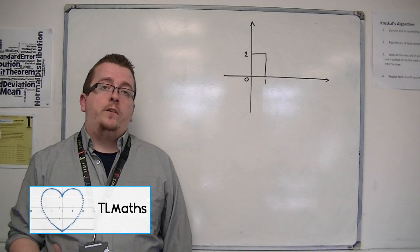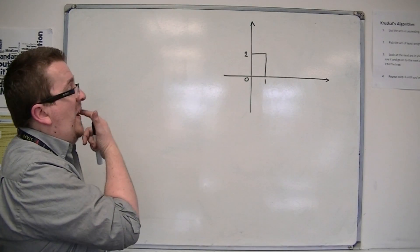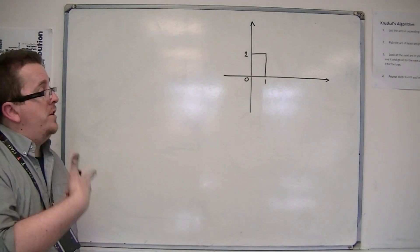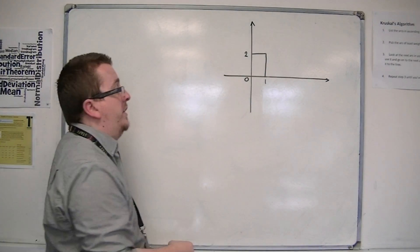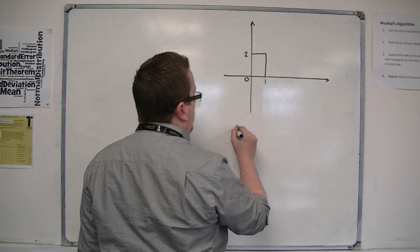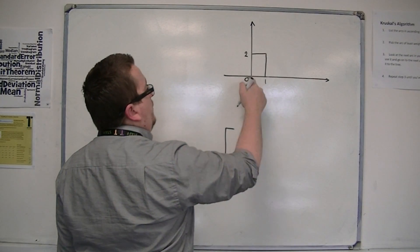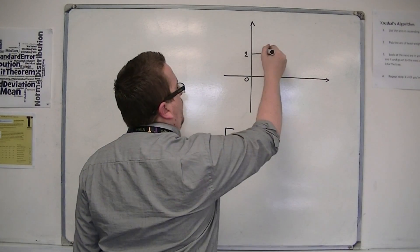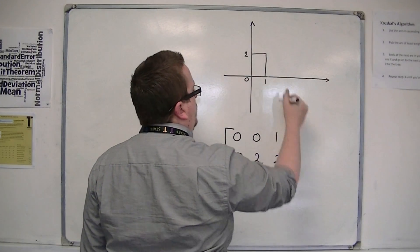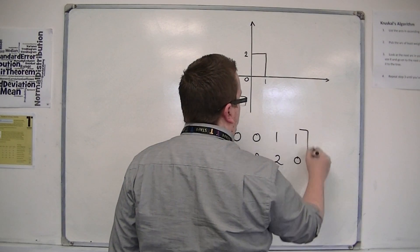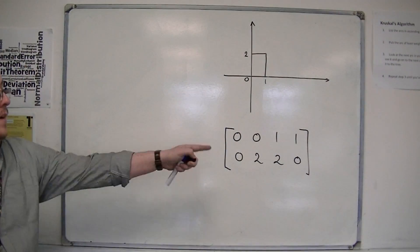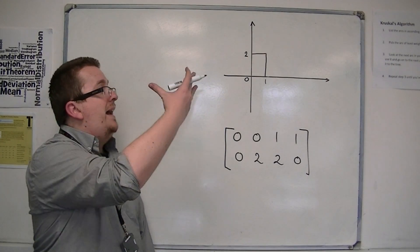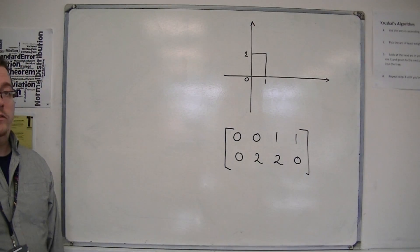As in the previous videos, I'm going to be looking at this rectangle. If you remember, I can define this rectangle using a matrix, using the coordinates of its corners. So I've got (0,0), (0,2), (1,2), and (1,0). I can apply matrices to this matrix and see how they transform this rectangle.